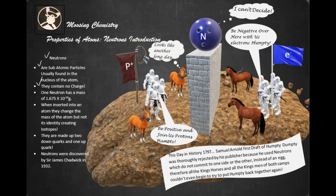The mass of one neutron is 1.675 times 10 to the negative 24 grams, which is slightly heavier than the mass of one proton.